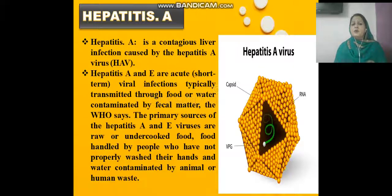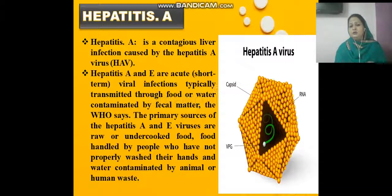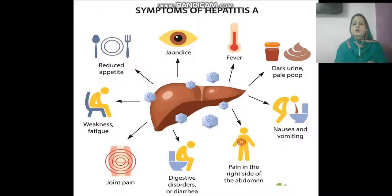Hepatitis A is a contagious liver infection caused by the hepatitis A virus — an RNA virus with a capsid. Hepatitis A and E are acute and short-term viral infections transmitted through water or food contaminated by fecal matter. People exposed to contaminated water or food are the primary source of hepatitis A. Common symptoms include jaundice, yellowing of the eyes, fever, dark urine, nausea, and pain in the right side of the abdomen, where the liver is located.